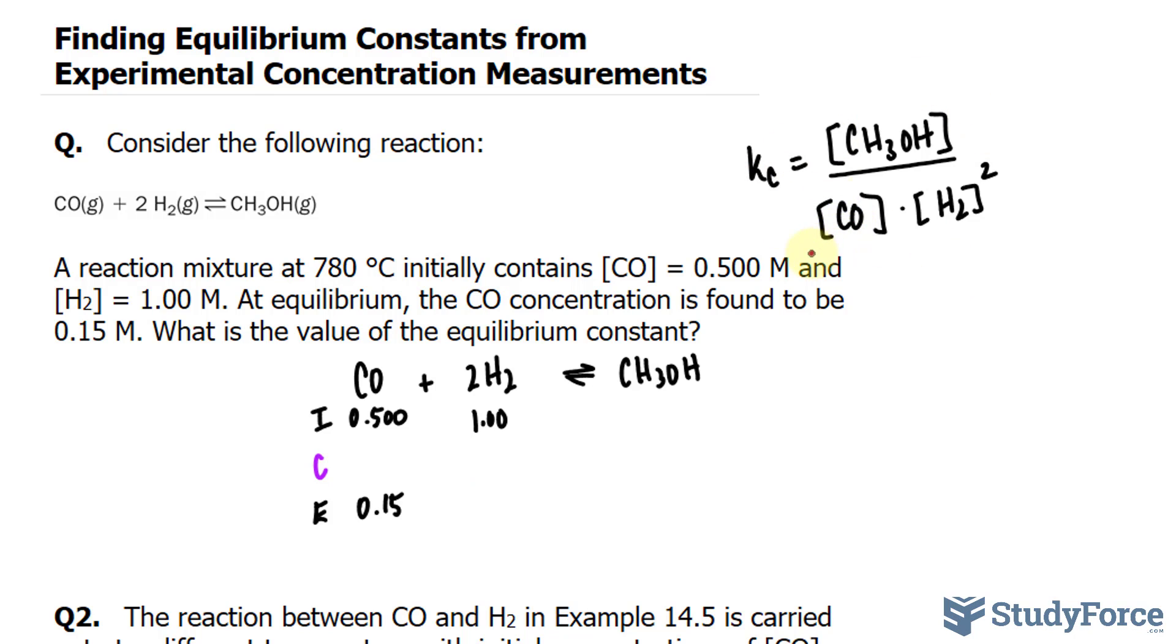Of course, at this point we can substitute 0.15 because we already have that information. We need this one, however, and this one. So how do we calculate the concentrations at equilibrium for those two?